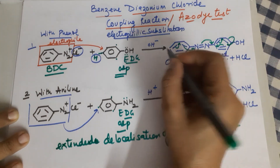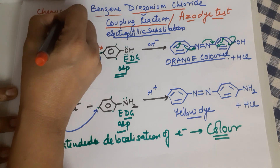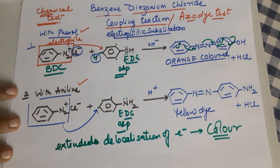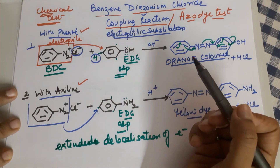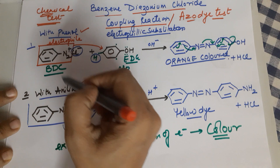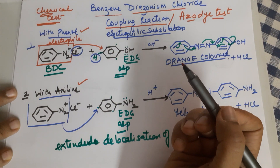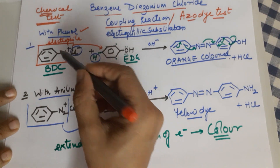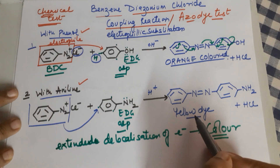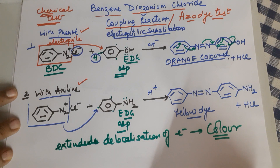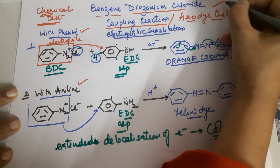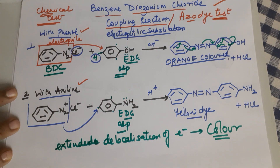The major advantage of this reaction is that you can use it as a chemical test for phenol and aniline. If you have phenol and aniline in two test tubes and you want to identify which is phenol, both of them are colored liquids. So when you add benzene diazonium chloride to both test tubes — maintaining a temperature of zero to five degrees because benzene diazonium chloride will become unstable otherwise — the test tube in which you get an orange color is your phenol, and the test tube in which you get a yellow colored dye is your aniline. That is how you can distinguish between phenol and aniline using benzene diazonium chloride. This also works as the azo dye test, a chemical test to distinguish between phenol and aniline.